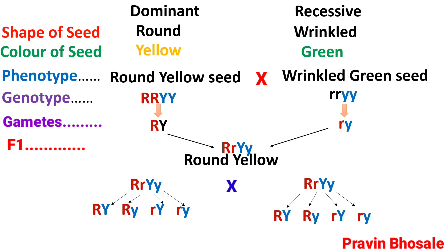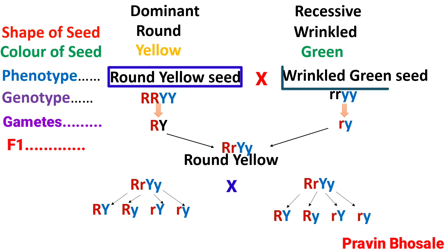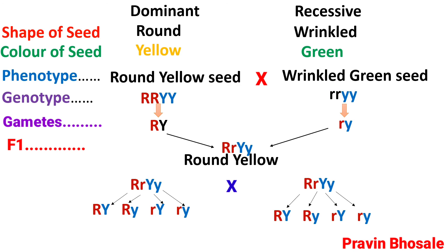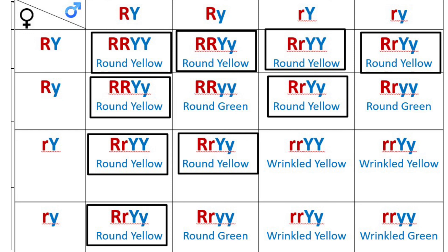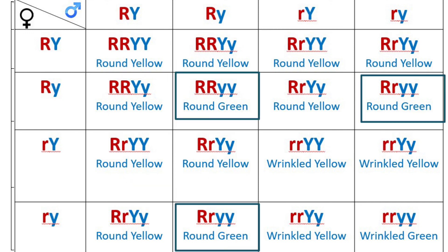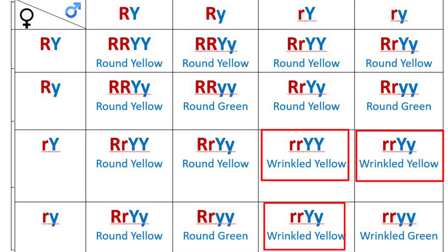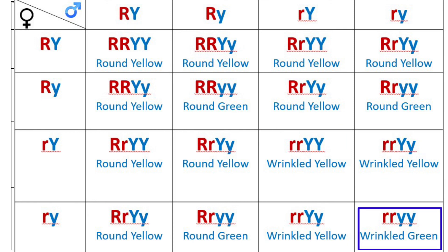Please note here, we have considered two plants: one plant producing round yellow seed and another producing wrinkled green seeds. These are two combinations. There will be two more combinations as well due to independent assortment. Four types of gametes are formed, giving 16 combinations. You can see: round yellow — nine, round green — three, wrinkled yellow — three, wrinkled green — one.